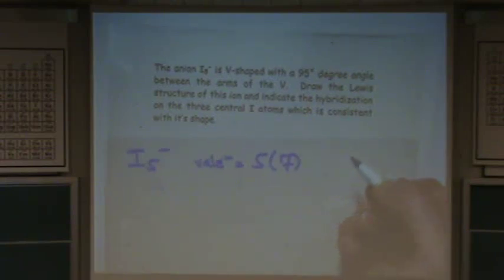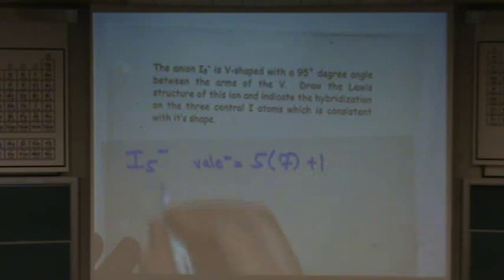So five times a column of iodine. It's in column seven. It says 7A on a periodic table in Roman numerals. So five times seven plus one, because there's an I5 minus. So this is from that minus charge. That gives a total of 36.